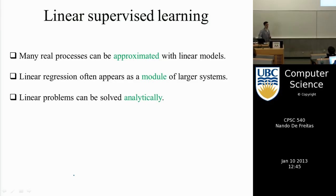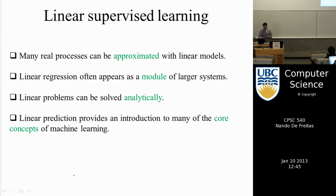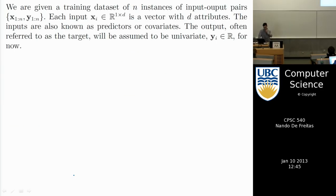Everything here can be done analytically — you can write the solution on a piece of paper. When we do neural networks and other techniques, that's no longer possible. We can't rely on doing anything by hand; we have to use computing.